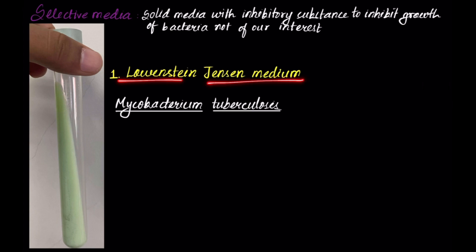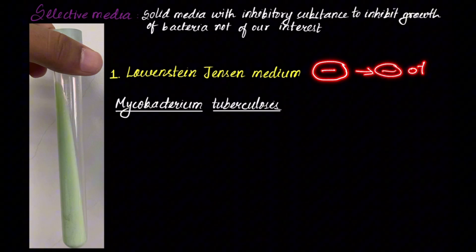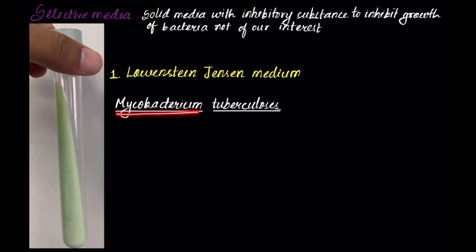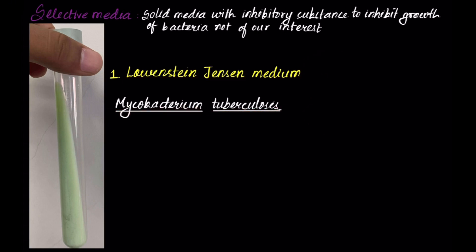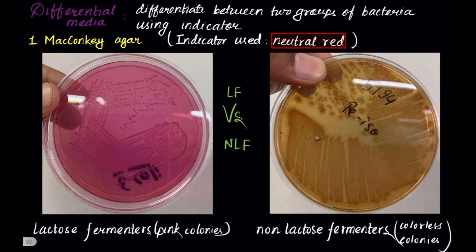For example, this green slope right here is Lowenstein-Jensen media. Lowenstein-Jensen media contains an inhibitory substance that inhibits the growth of other bacteria except Mycobacterium tuberculosis. That is why this medium can be used for culture of Mycobacterium tuberculosis.